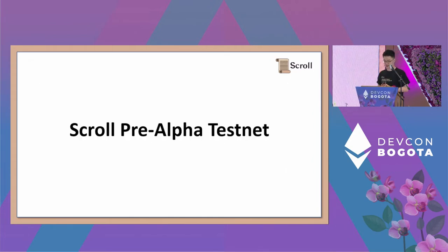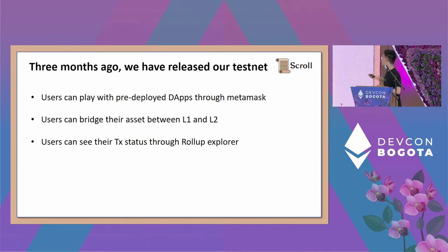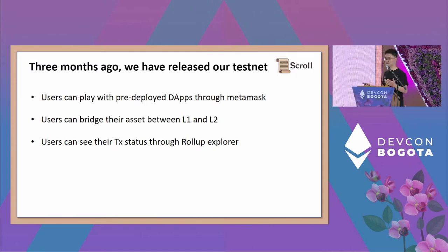After this technical background, I'll introduce our Scroll pre-alpha testnet and where we are. Three months ago, we released our pre-alpha testnet. That version was mostly for community users, to collect user feedback. They can play with our pre-deployed applications — for example, a fork of Uniswap — using their familiar wallets like MetaMask. Users can bridge assets between layer one and layer two, experiencing deposits and withdrawals, and see their transaction status through the rollup explorer.